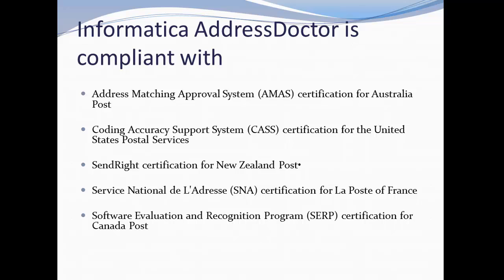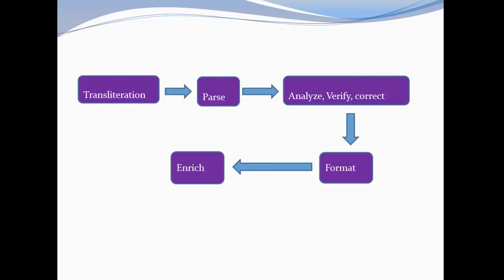In this diagram we see what are the phases of Address Doctor processing. The first phase is transliteration — it actually translates the given input address. The input address has fields like address line 1, address line 2, city, state, country, and the zip code. Based on the input and the Address Doctor population for that corresponding country, it translates the given address. After this, the second phase is parsing — it parses the address according to convention.